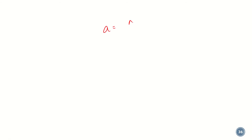Welcome back class. In the last lecture we learned that we can compute the turn ratio of the transformer by taking the ratio of the number of turns of primary to secondary, which equals primary voltage divided by secondary voltage, or secondary current divided by primary current. We also learned about impedance transfer using a transformer and solved a practical example.